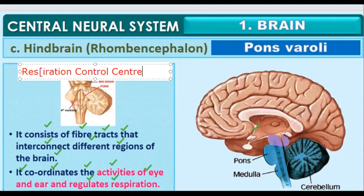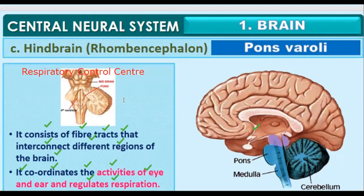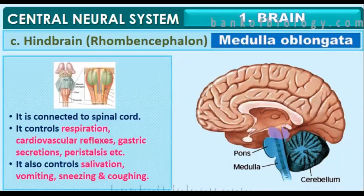The respiratory control center is located in the pons. The pons coordinates the activities of the eye and the ear and regulates respiration.